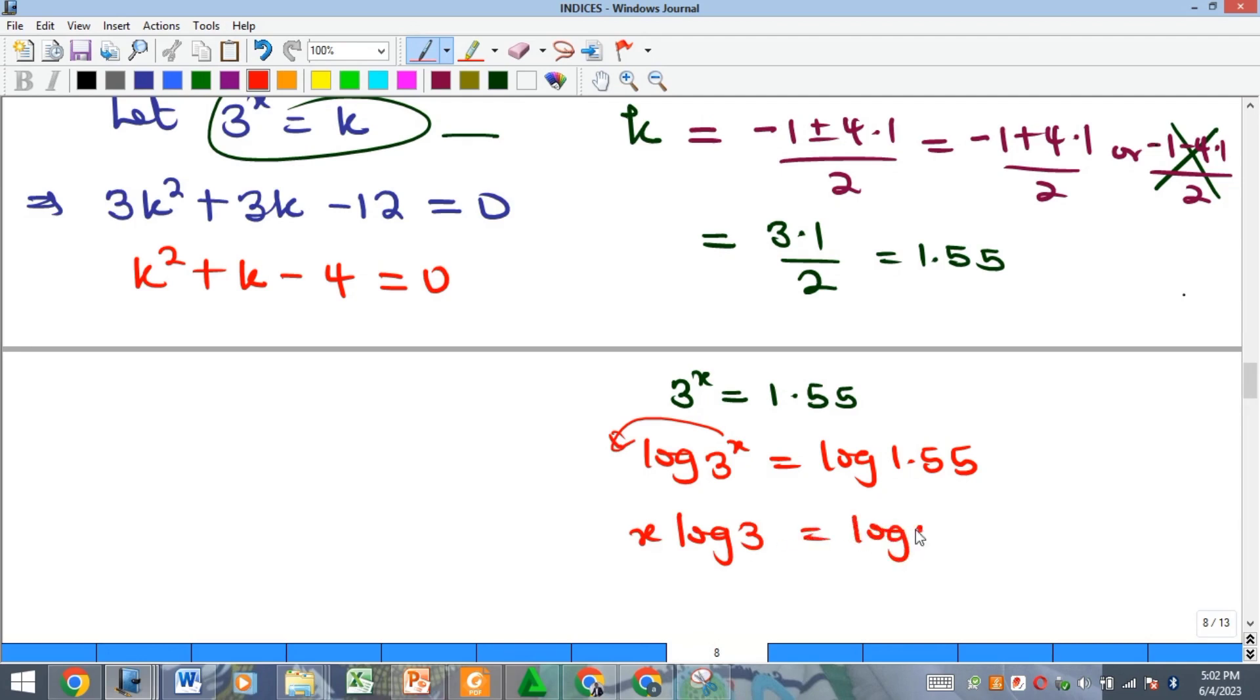But of course we can divide both sides by log 3, so which means that our x will now be log 1.55 all over the log of 3. We can actually stop here if we want, but at the same time we can simplify this using calculator.